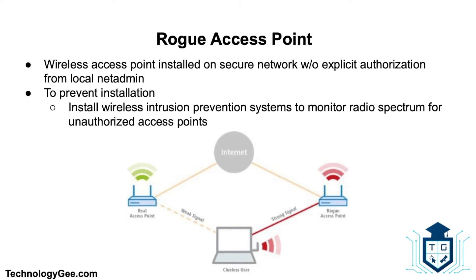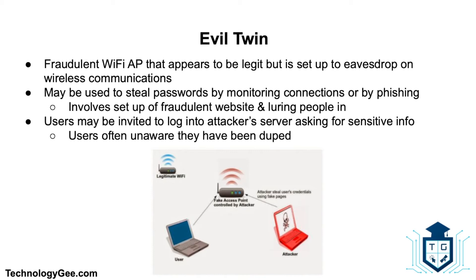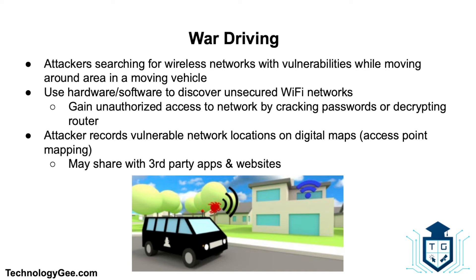An evil twin is a fraudulent Wi-Fi access point that appears to be legitimate but is set up to eavesdrop on wireless communications. The evil twin is the wireless LAN equivalent of the phishing scam. This type of attack may be used to steal the passwords of unsuspecting users, either by monitoring their connections or by setting up a fraudulent website and luring people there. Unwitting web users may be invited to log into the attacker's server, prompting them to enter sensitive information such as usernames and passwords, often without knowing they've been duped until well after the incident.